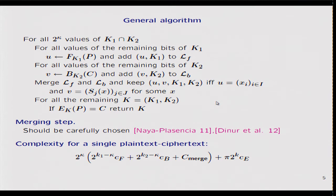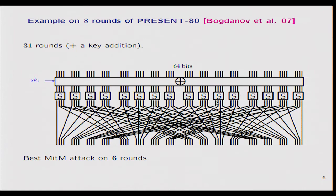Let's see how it works on a toy example: an attack on eight rounds of PRESENT. This is a toy example because PRESENT has 31 rounds, but it improves the best-known meet-in-the-middle attack by two rounds. This is the round function we have in PRESENT.